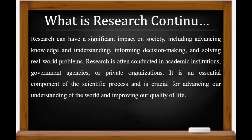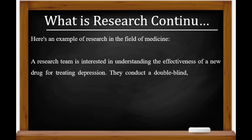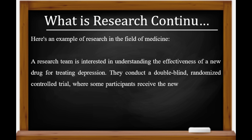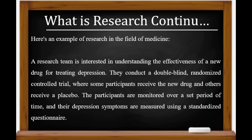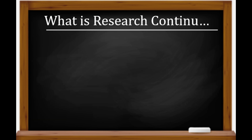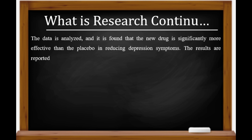Here is an example of research in the field of medicine. A research team is interested in understanding the effectiveness of a new drug for treating depression. They conduct a double-blind, randomized controlled trial where some participants receive the new drug and others receive a placebo. The participants are monitored over a set period of time, and their depression symptoms are measured using a standardized questionnaire. The data is analyzed, and it is found that the new drug is significantly more effective than a placebo in reducing depression symptoms. The results are reported in a peer-reviewed journal and are then used to inform decision-making by healthcare providers and policy makers.